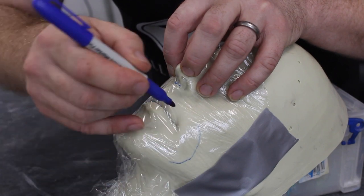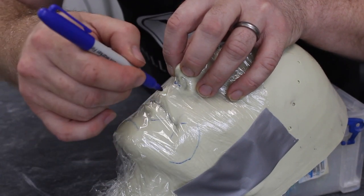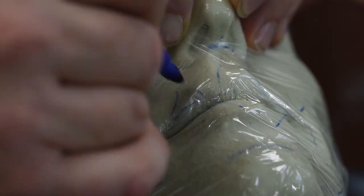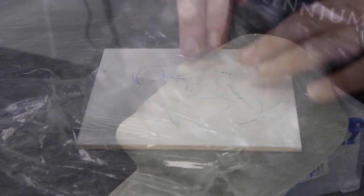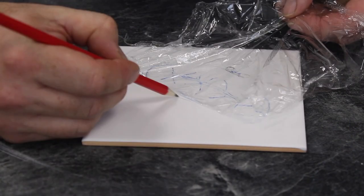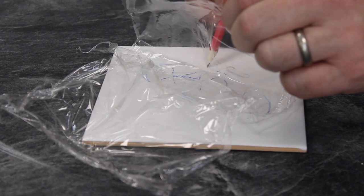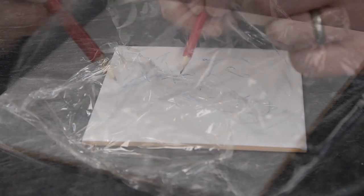This helps me work out the shape, the size, the area this piece will cover. You could do it on a person, on a life cast if you have one, or even a mannequin head - anything that's going to give you an approximate shape and size.